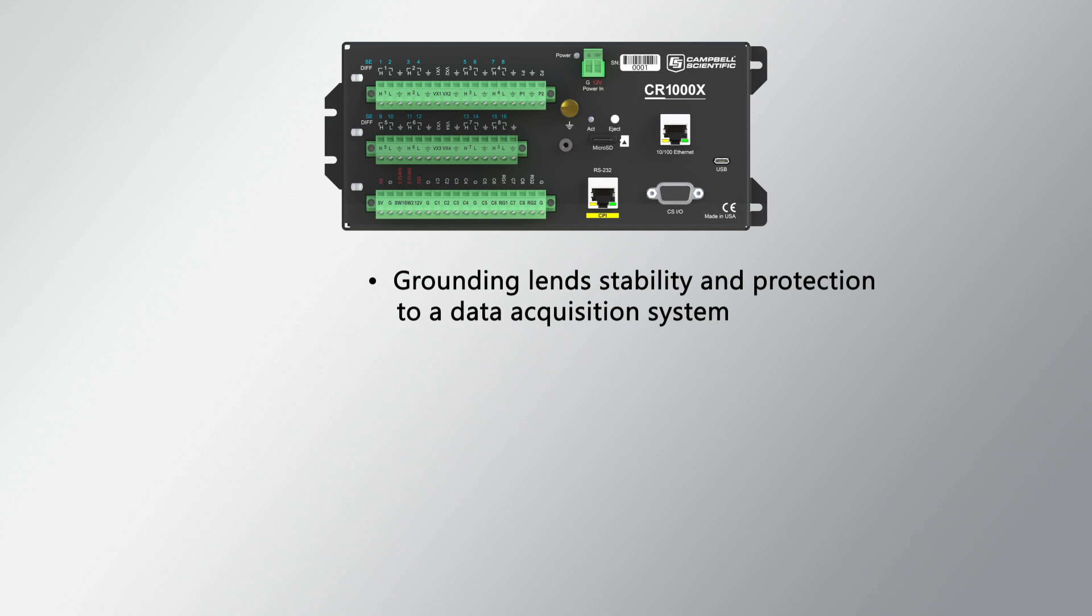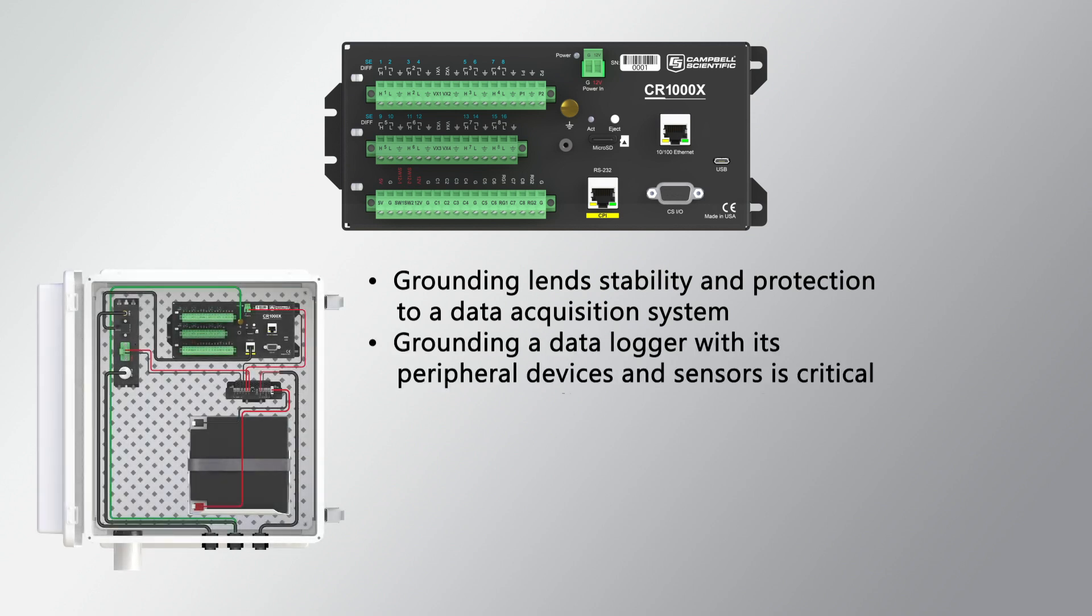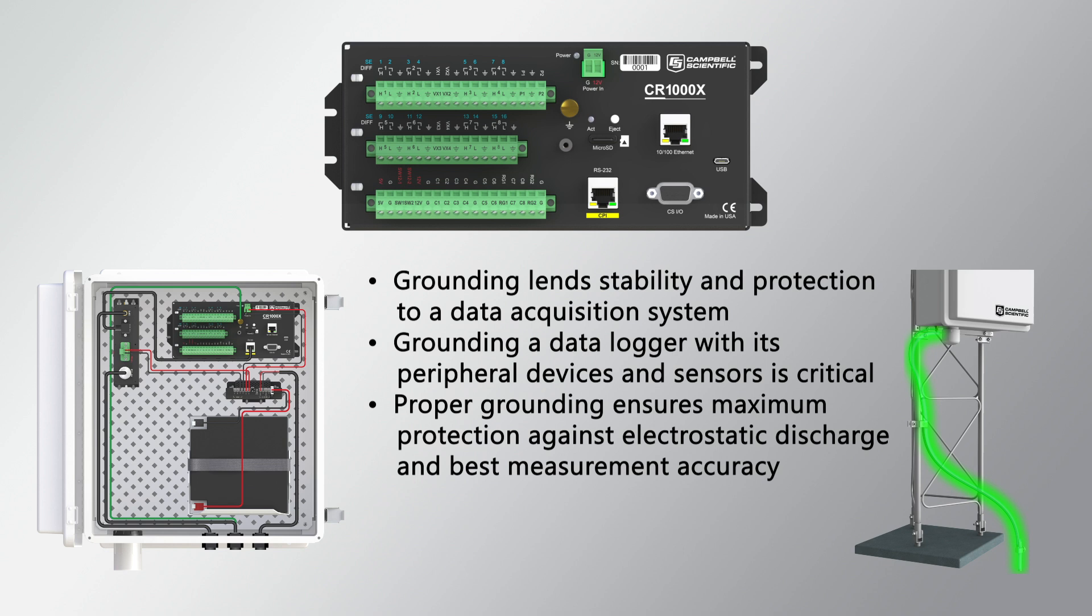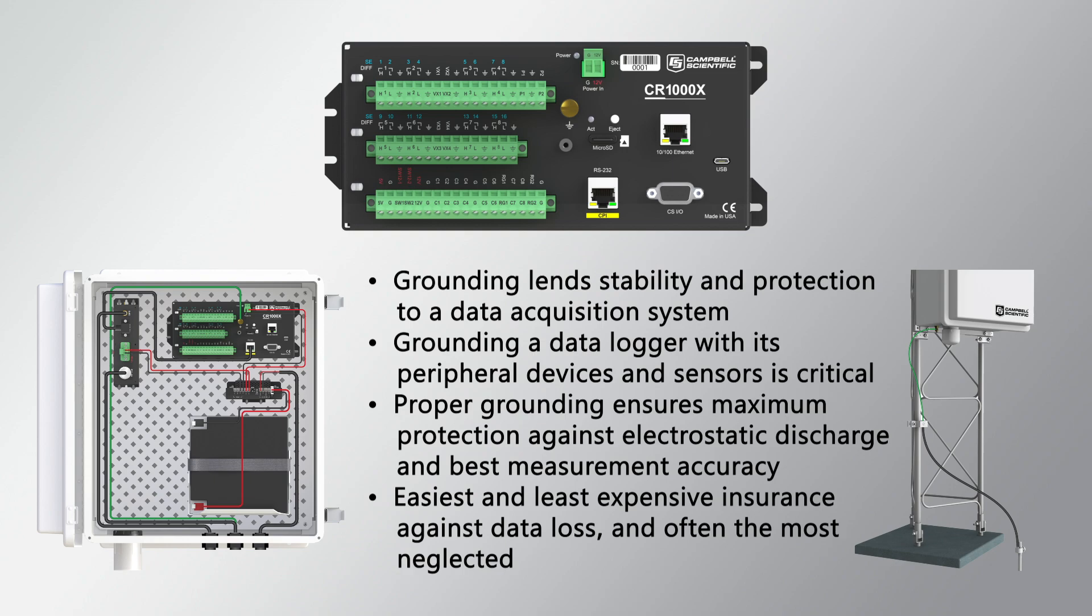Proper grounding lends stability and protection to a data acquisition system. Grounding the data logger with its peripheral devices and sensors is critical in all applications. Proper grounding will ensure maximum protection against electrostatic discharge and the best measurement accuracy. It is the easiest and least expensive insurance against data loss, and often the most neglected. In this video, I will discuss the different types of grounding terminals available on Campbell Scientific data loggers and how to use each one.